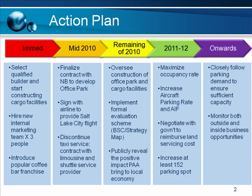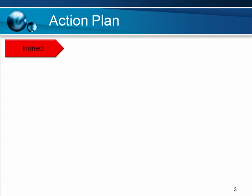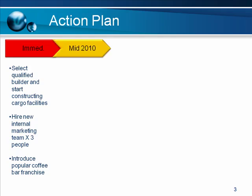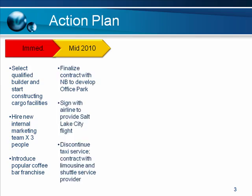So let's look at the slide that I did. We have the same action plan, but we first talk about what are the immediate things we're going to do. The first thing we're going to do is select a builder, et cetera. We talk about that, then we can talk about the next item, then the next item. We've now built each item individually for just this column. Then we say, okay, what are we going to do in the mid-2010 part of the plan? We do the first item, and then each one is built individually and discussed individually with the audience.